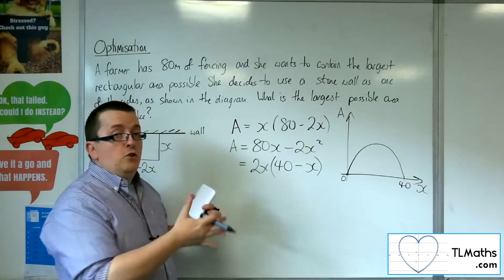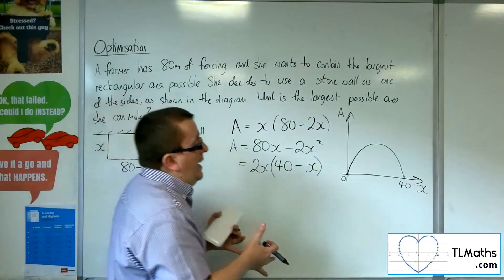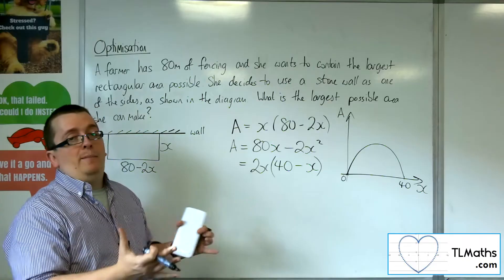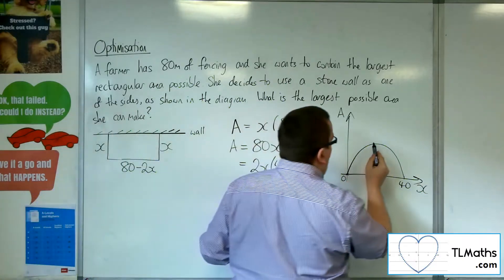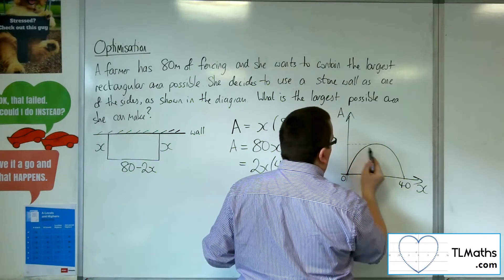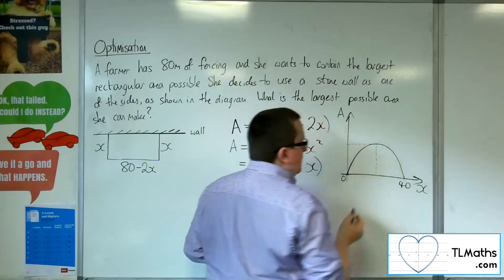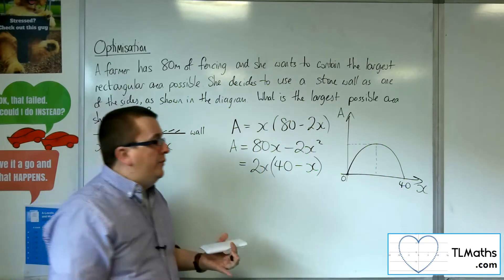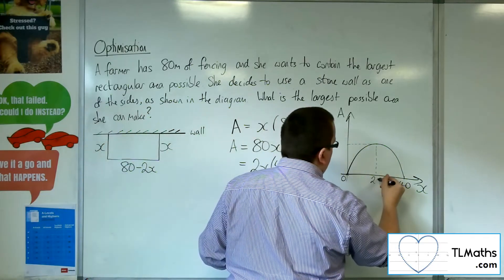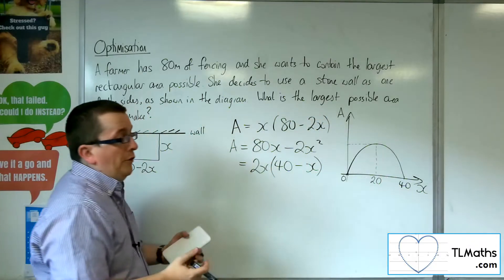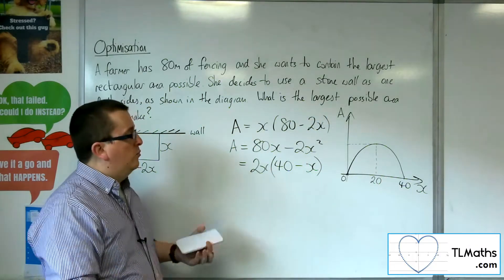Now, just from the graph, we can think about, well, if it's a parabola, its maximum height will be halfway along. So it will be when x is 20, because the curve will be symmetric, being a parabola.